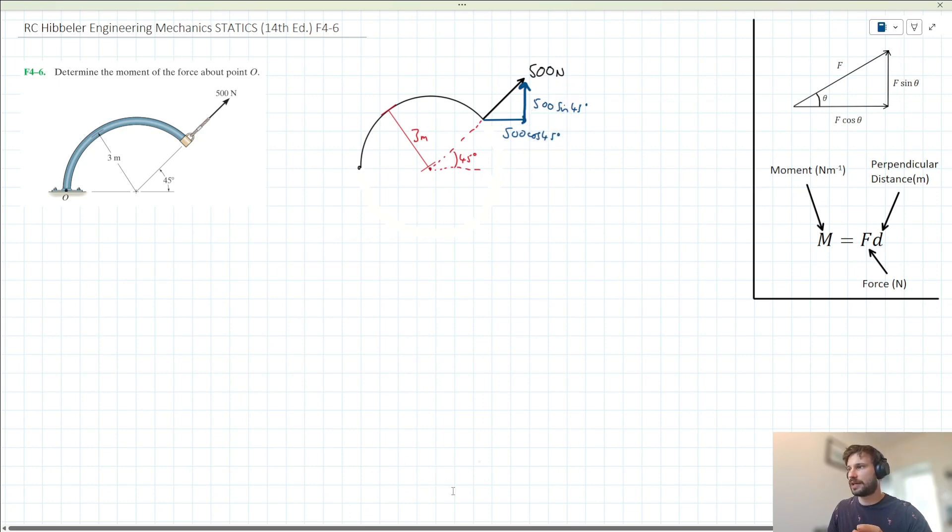Let's go ahead and think about taking moments here. So evidently for the horizontal component here, the perpendicular distance is going to be this length here. And for the vertical component, the perpendicular distance is going to be this length here.